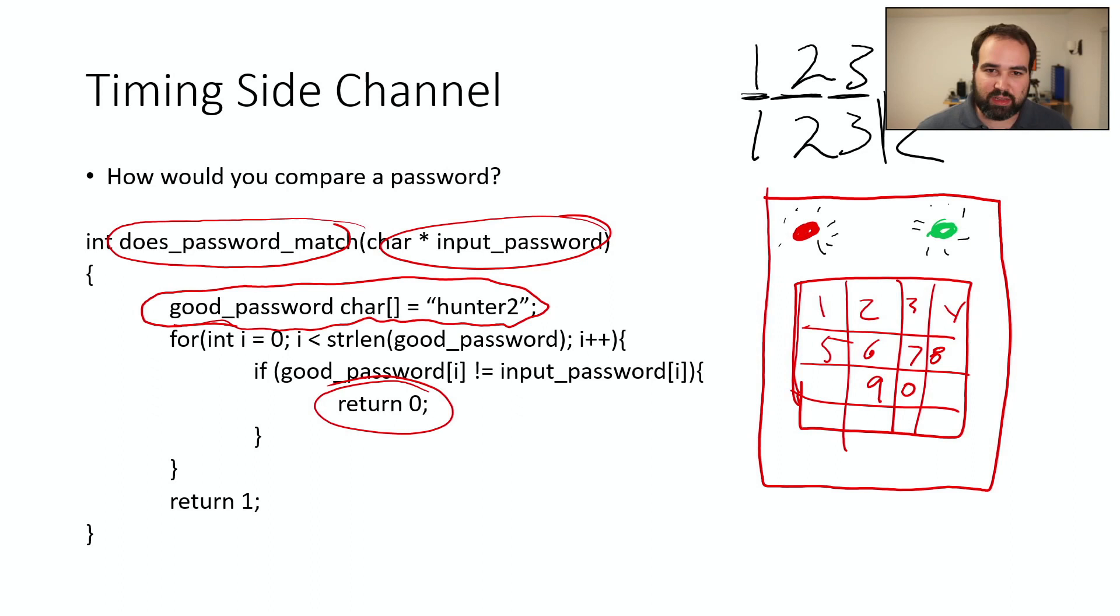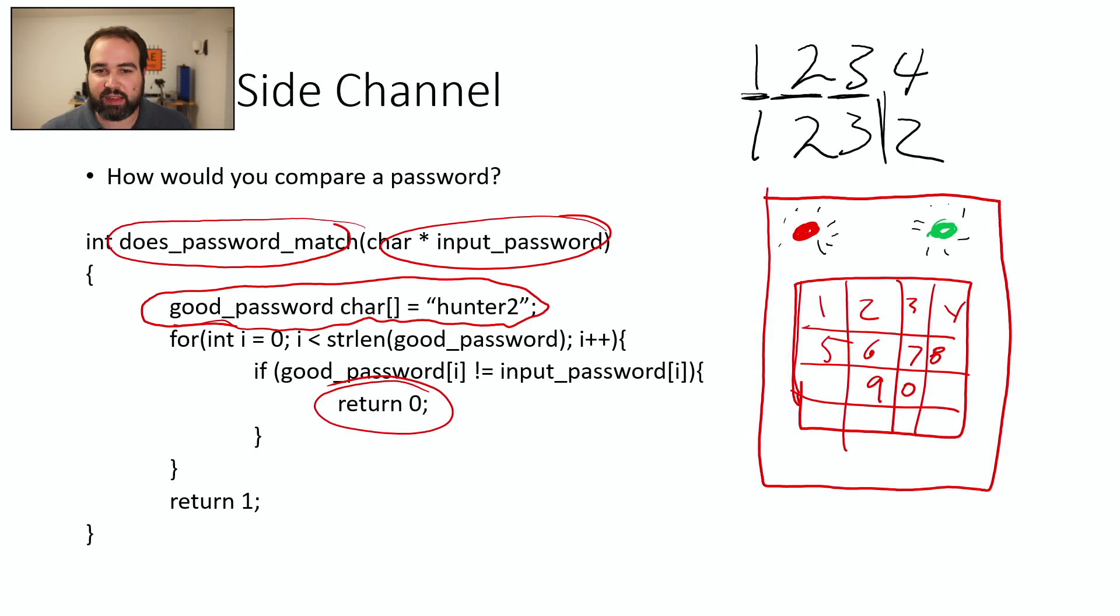So that's like a really classic timing side channel. A really classic timing side channel. So this can happen in all sorts of ways. It doesn't have to be so obvious in the code as this, but normally there's some difference in the execution between a correct and incorrect password or key or something like that.